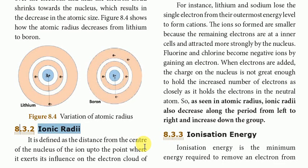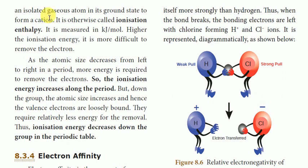Hello everyone, we are going to talk about Periodic Classification of Elements. Ionization Energy is the minimum energy required to remove an electron from isolated gaseous atoms in its ground state to form a cation. It is otherwise called Ionization Enthalpy.